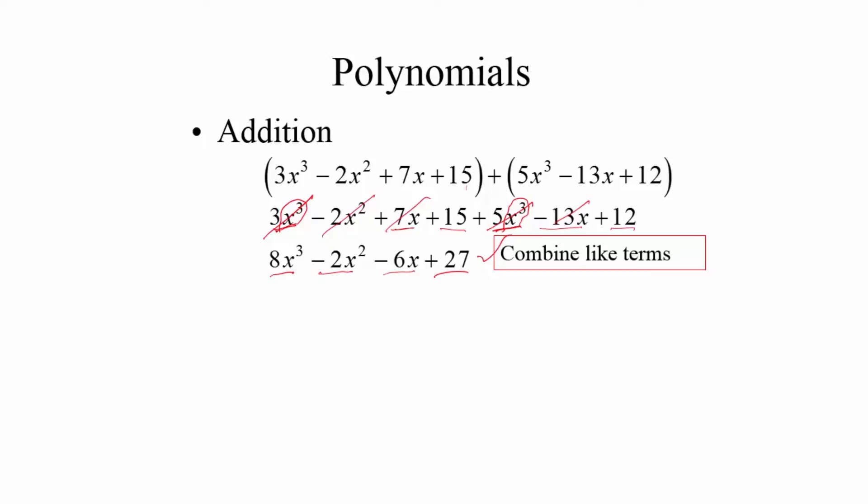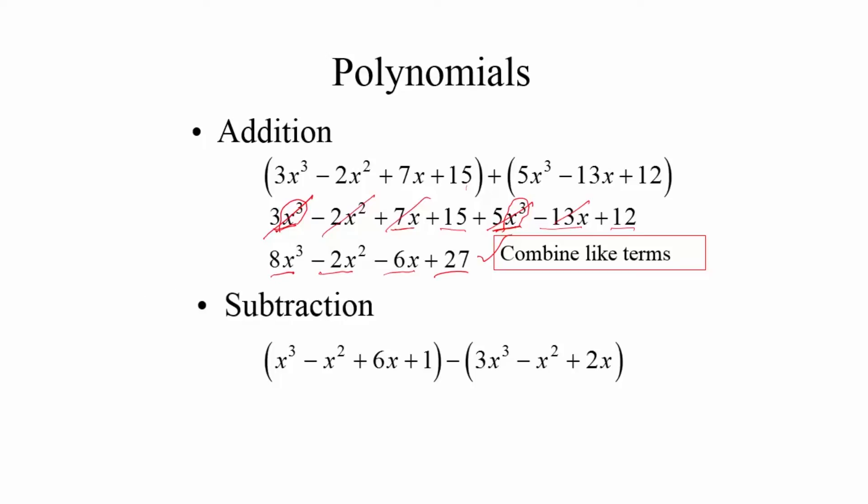For subtraction of polynomials: (x^3 - x^2 + 6x + 1) - (3x^3 - x^2 + 2x). Since there is no negative sign before the first parenthesis, lift it as is. The negative sign in front of the second parenthesis changes the sign of every term inside it.